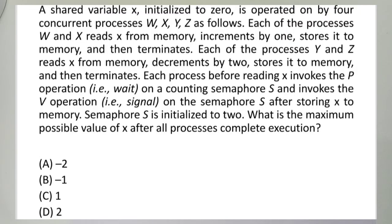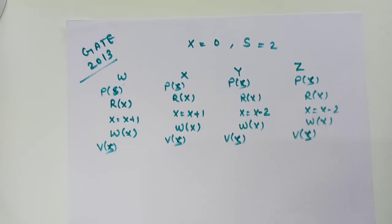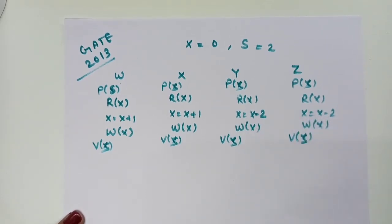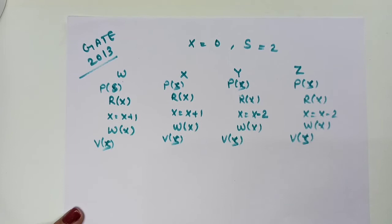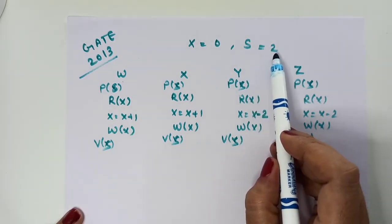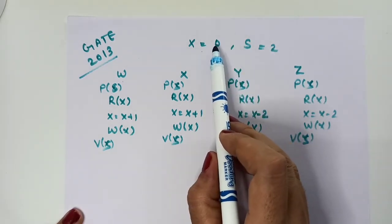The question asks: what is the maximum possible value of x after all processes complete execution? We want the maximum — so we focus on the increment operations. x's initial value is 0.